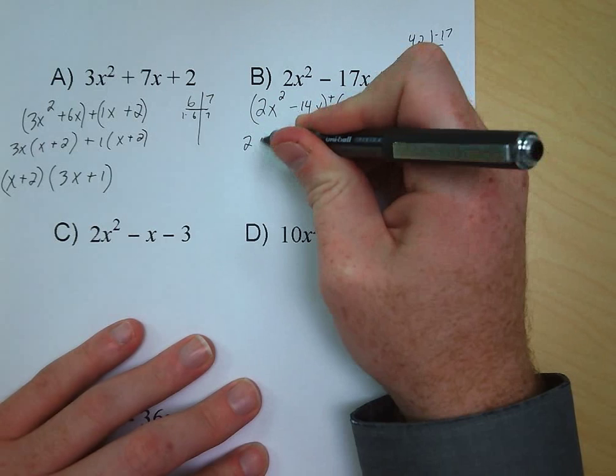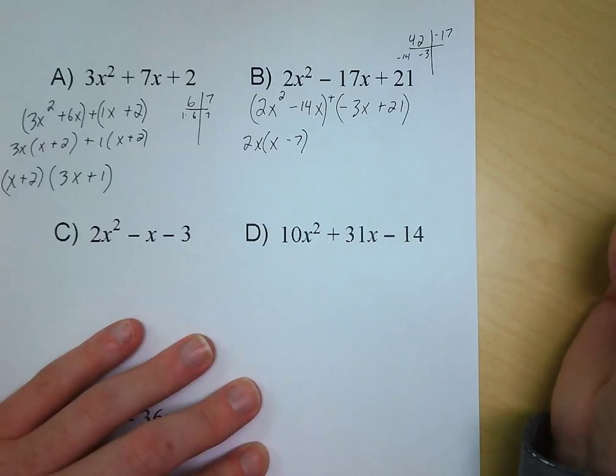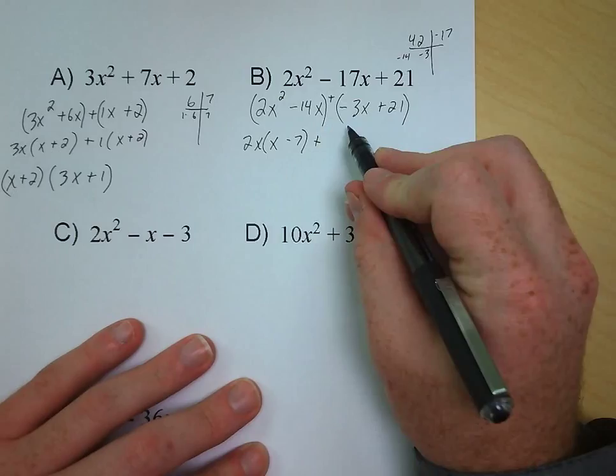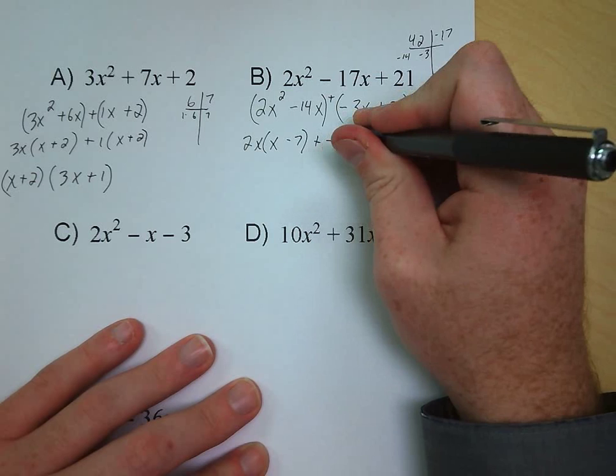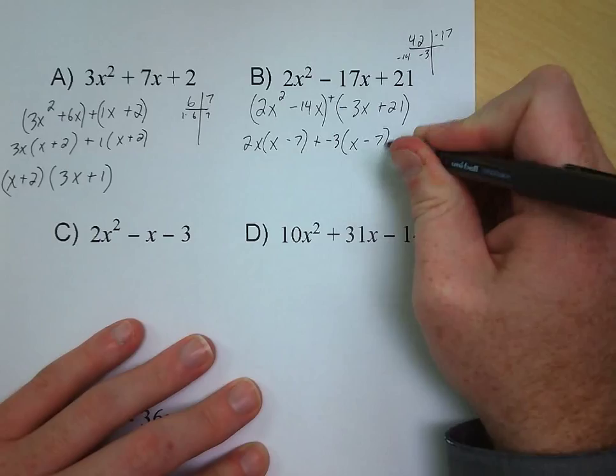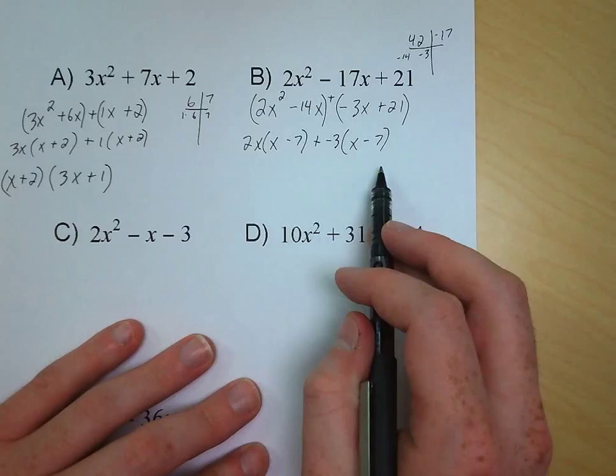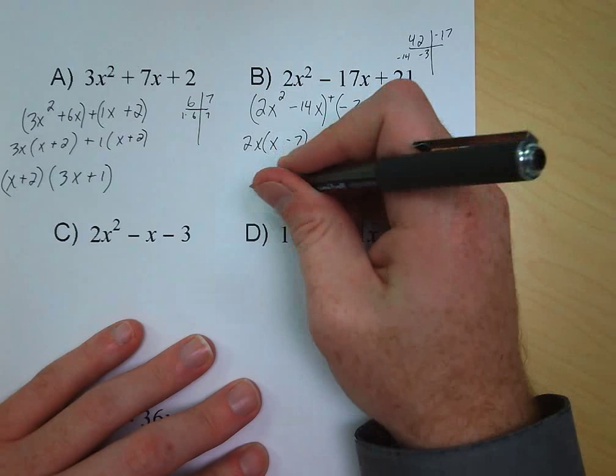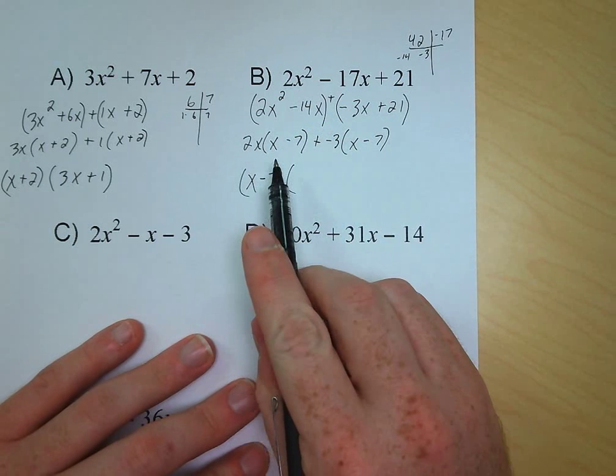We have our plus sign, and I can pull out a negative 3 from the second group, leaving us with x minus 7. Now I have two terms and they both have x minus 7 as one of their factors, so I can pull that out. What I'm left with is 2x from my first term and minus 3 from my second term, and we are now simplified.